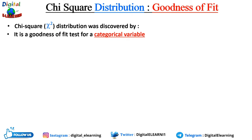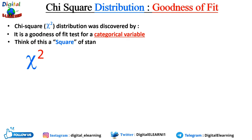Chi-square distribution, or goodness of fit test, is a type of hypothesis test for categorical variables. Goodness of fit is a measure of how well a statistical model fits a set of observations. Think of this as the square of a standard normal distribution.